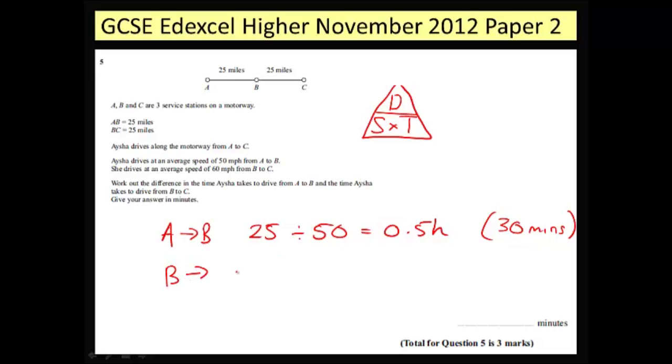The second part of the journey then, B to C. So the distance is still the same, 25, but this time she's got a different average speed which is 60. And when I divide those two together I get 0.416.